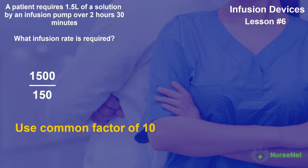10 goes into 1,500, 150 times. 10 goes into 150, 15 times. We can get this fraction down even further by using a common factor of 5, since 5 will go into both 150 and 15. So 5 goes into 150, 30 times. And 5 goes into 15, 3 times.